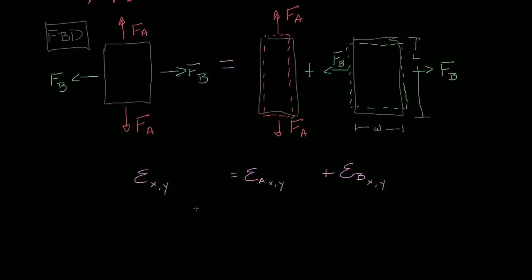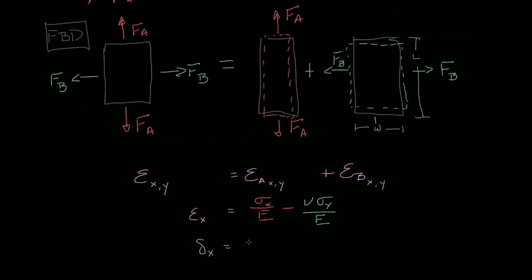So for example, the strain in the x direction is equal to the stress in the x direction — which is due to force A — divided by E, minus the Poisson's ratio times the stress in the y direction divided by E. Likewise, if we wanted to find the deformation in the x direction, we'll simply take the length times the strain in the x direction.